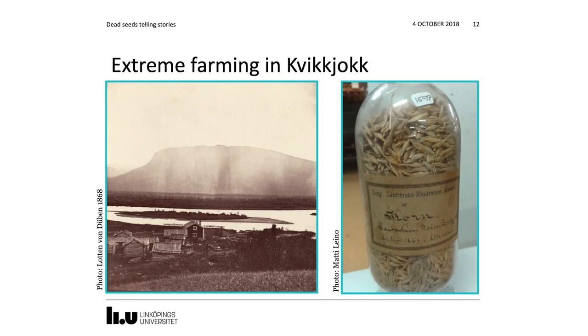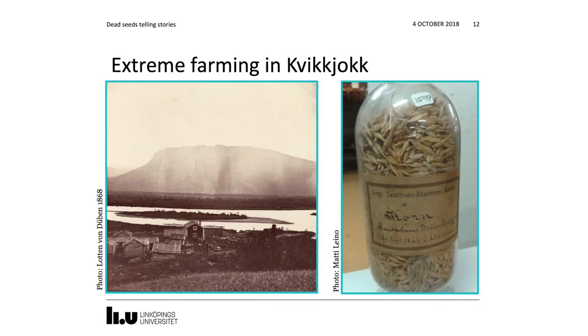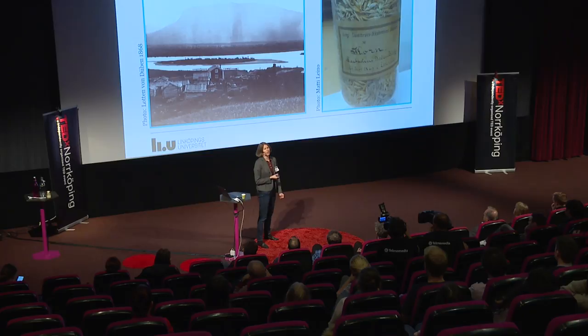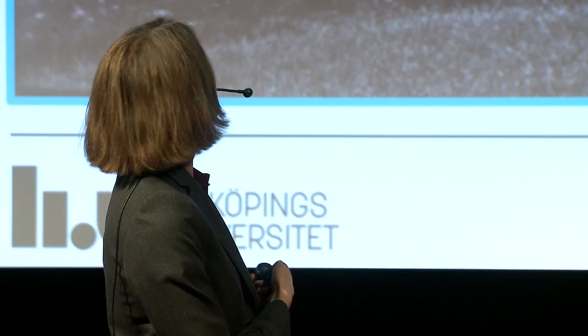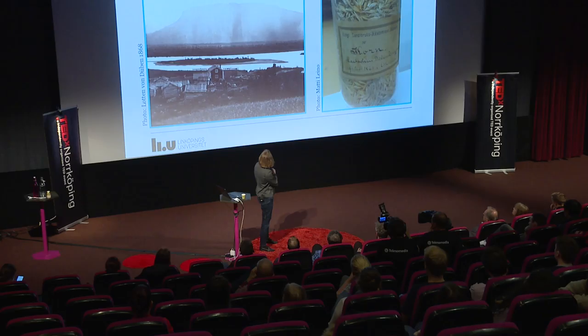One seed jar particularly intrigued us — a jar of seeds harvested in Kvickjok, a small village in northern Sweden, in 1868. We actually know what Kvickjok looked like, because in that same year Lotte Mondeven was there and took photographs. So we have images of the actual area where these seeds were harvested in the same year.